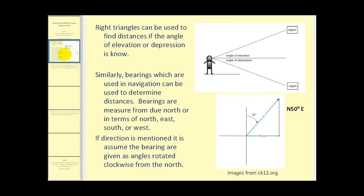Right triangles can be used to find distances if the angle of elevation or depression is known. This horizontal line represents the line of sight. Looking upward, this would be the angle of elevation, or looking downward, this would be the angle of depression.